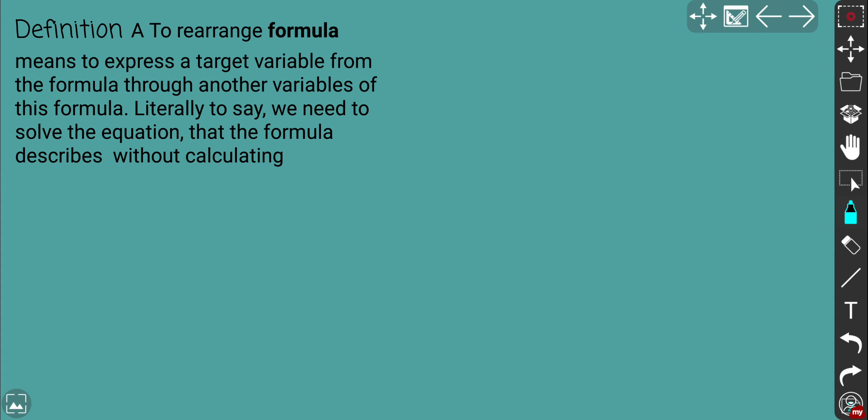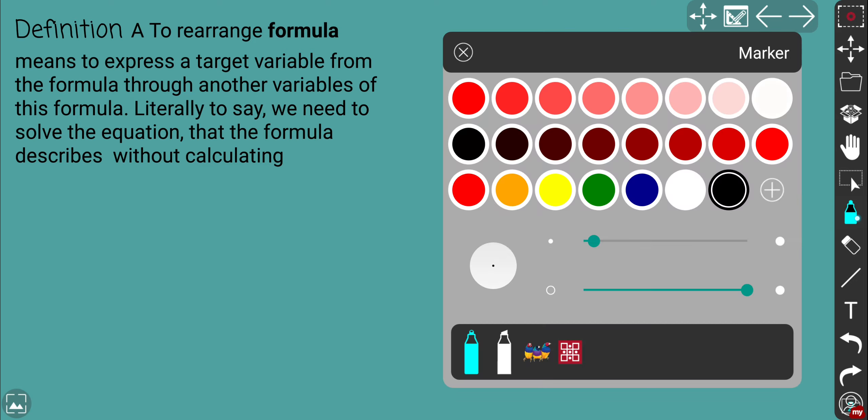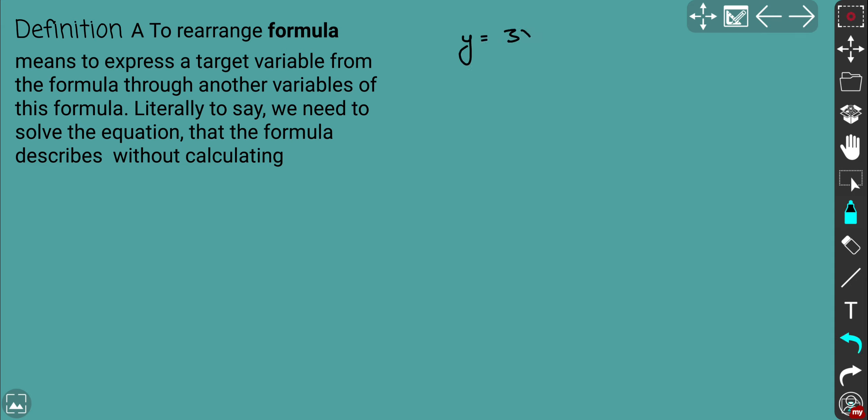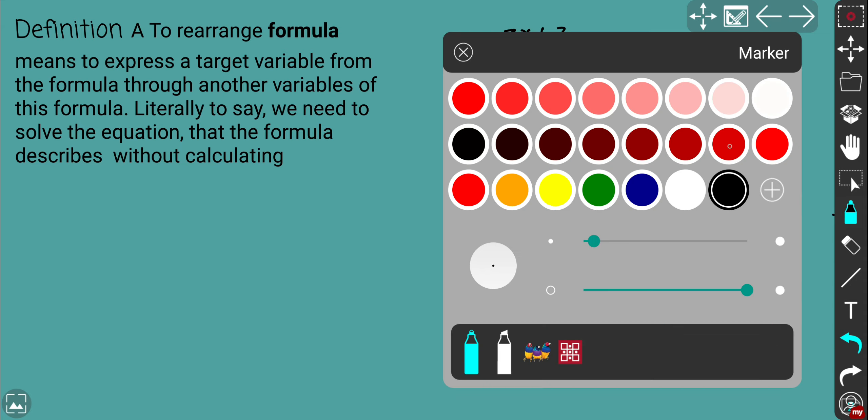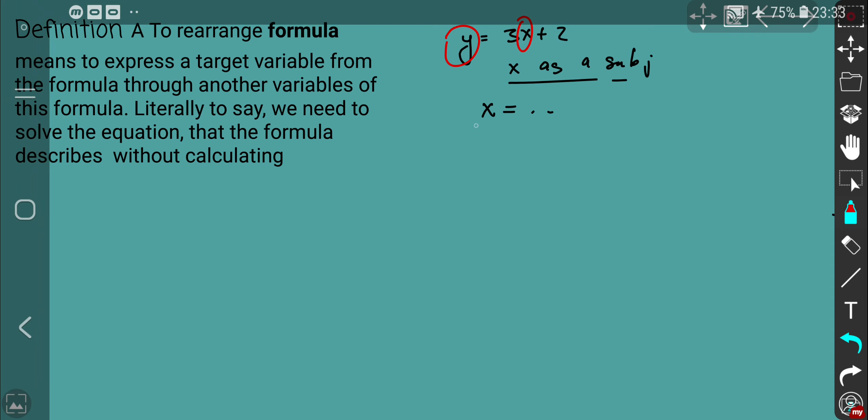First of all, I'll give a brief definition of what it is and what it needs to rearrange the formula. That simply means you have a target value that you want to put as the subject. Let's consider an equation of a straight line, let's say y equals 3x plus 2, and you want to make x as the subject. So in this given formula, you simply need to say that x equals something. That's what is called rearrangements. Basically, make your target variable from the formula expressed through another variables. It's almost the same as attempting to solve an equation, but without any calculations.